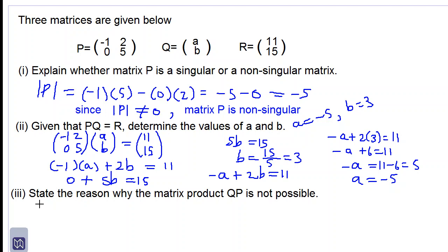Let's move on to part 3. We state the reason why the matrix product QP is not possible. So Q has an order. We find the number of rows which is 2 rows by 1 column.